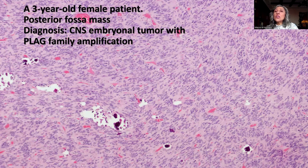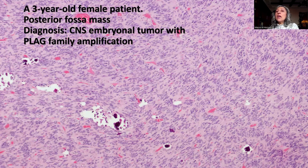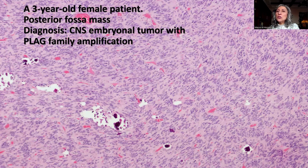Experience with this tumor type is still in its early stages, and we are not yet certain of its natural history or optimal treatment. The diagnosis can only be rendered using advanced molecular diagnostics. Keep this entity in mind, particularly when the morphology deviates from typical ependymoma and the EMA does not show the typical strong or widespread positivity expected with ependymoma.